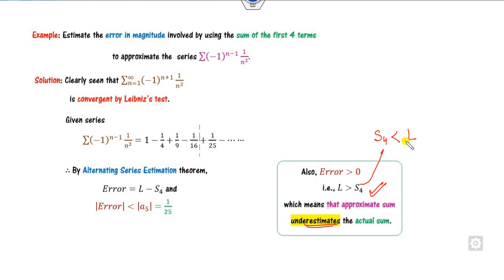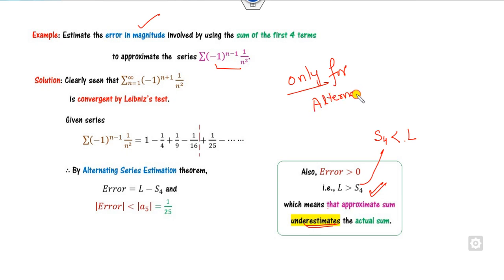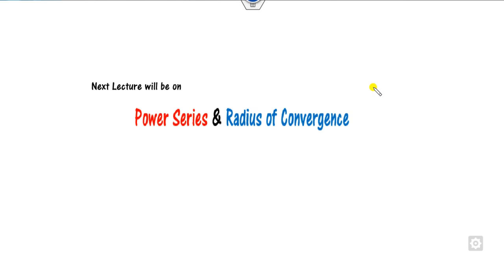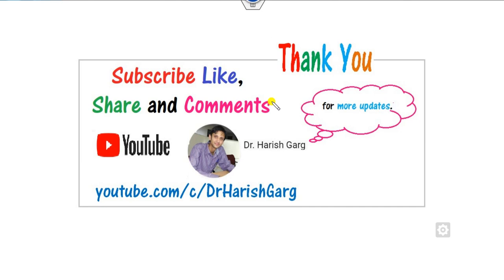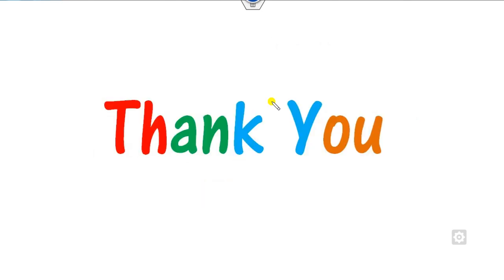This is the way you can find the error bounds on the alternating series. Remember this is only for alternating series, not for general series. I hope you can simply learn that. We will see more lectures related to power series and the radius of convergence in our next lecture. Till then, like, share, and comment on these videos. Best of luck. Happy learnings.